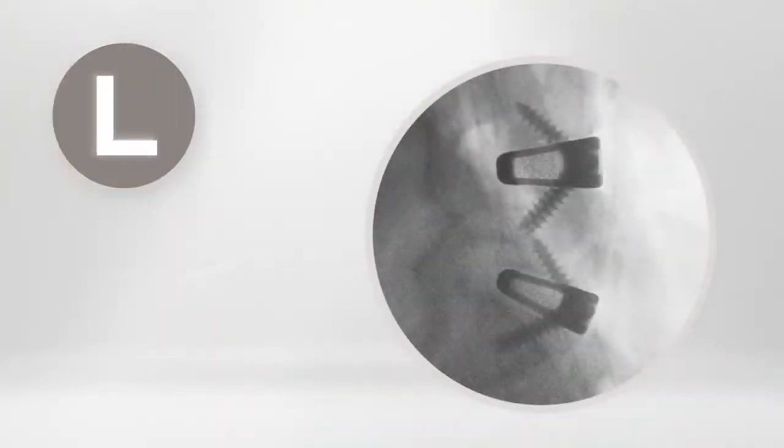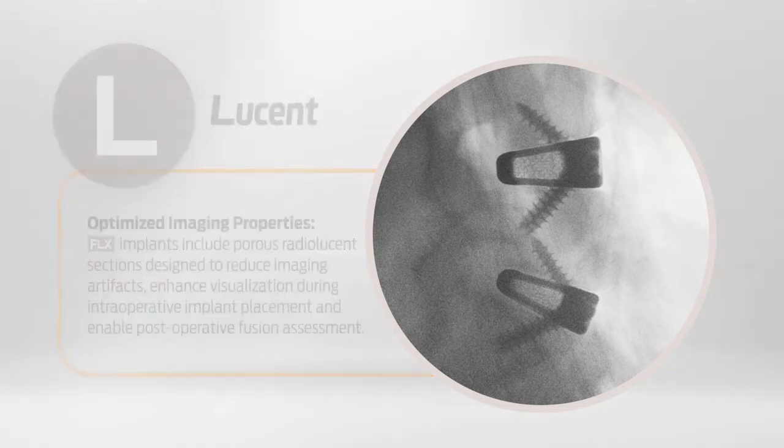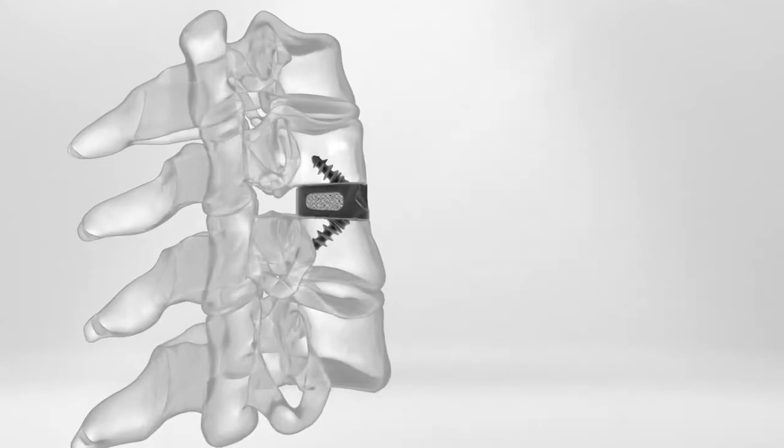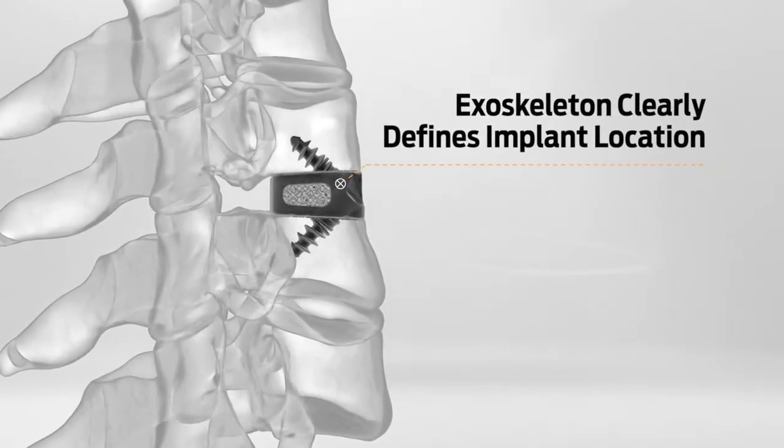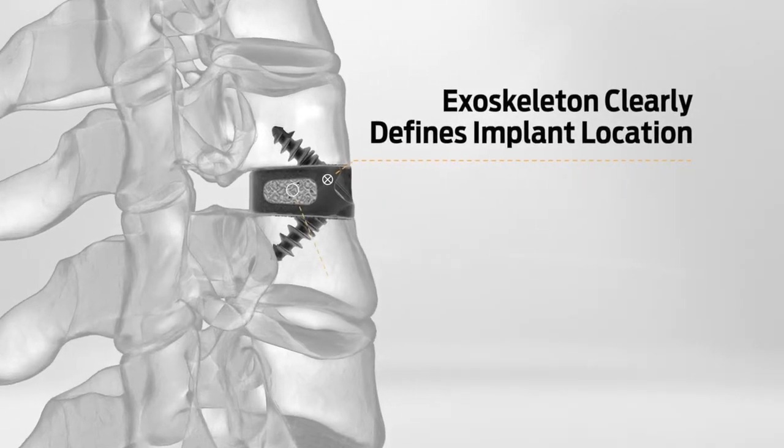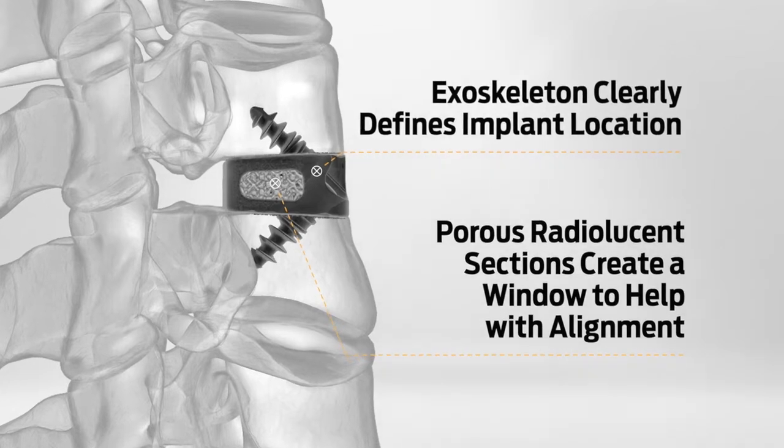The L in Flex stands for Lucent. Flex implants were designed with imaging in mind. Under fluoroscopy, the solid exoskeleton clearly defines the implant location within the disk space, while the porous radiolucent sections create a window to help with device alignment.